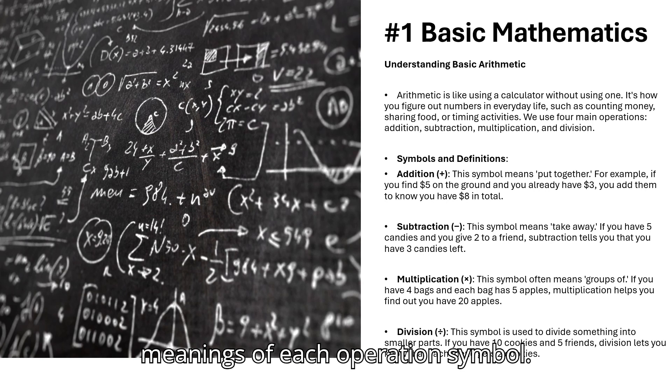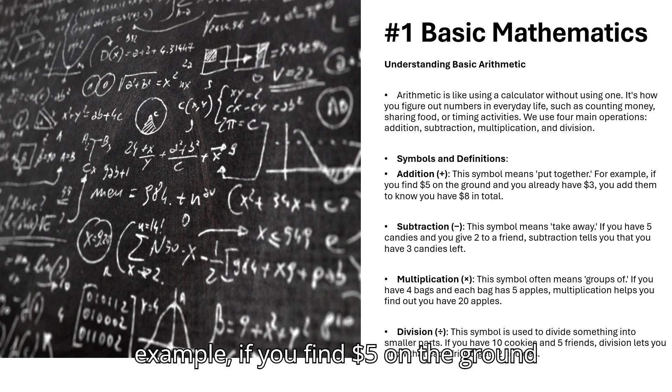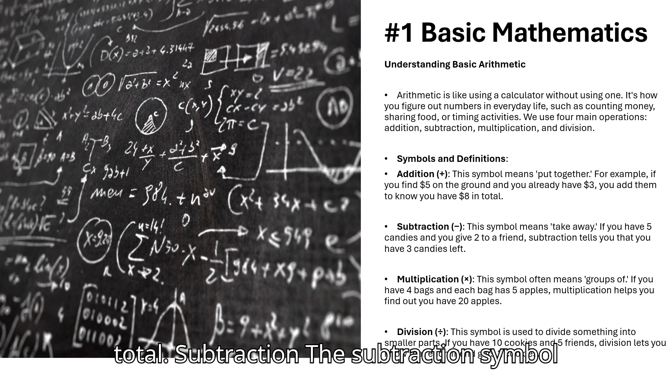Let's break down the meanings of each operation symbol. Addition - the addition symbol is plus. It means putting things together. For example, if you find $5 on the ground and you already have $3, you add them together to know that you have $8 in total.